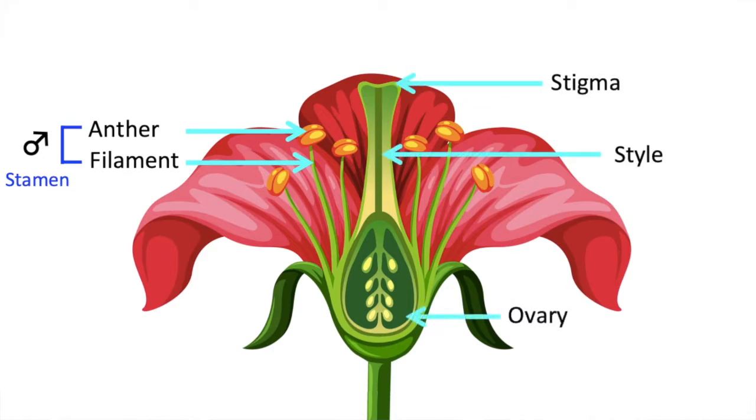The stigma, style, ovary and ovule are the female parts of a flower. We call this the carpel or pistil.